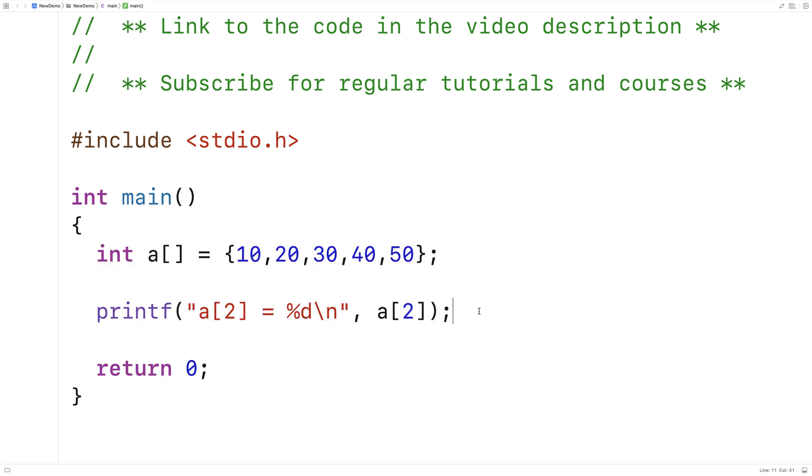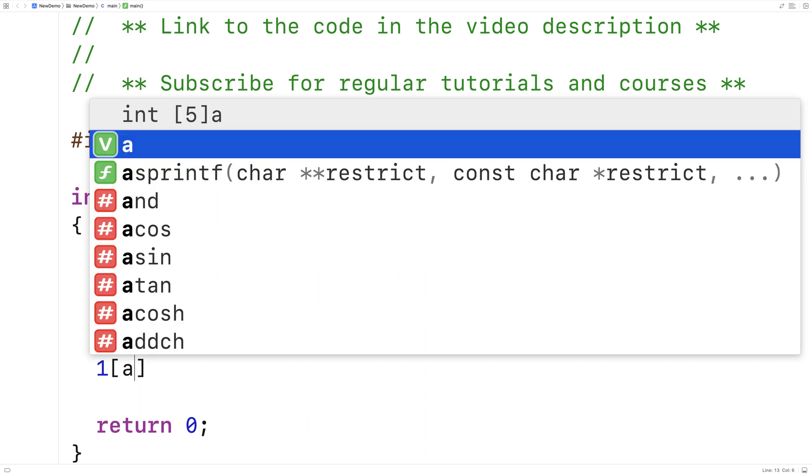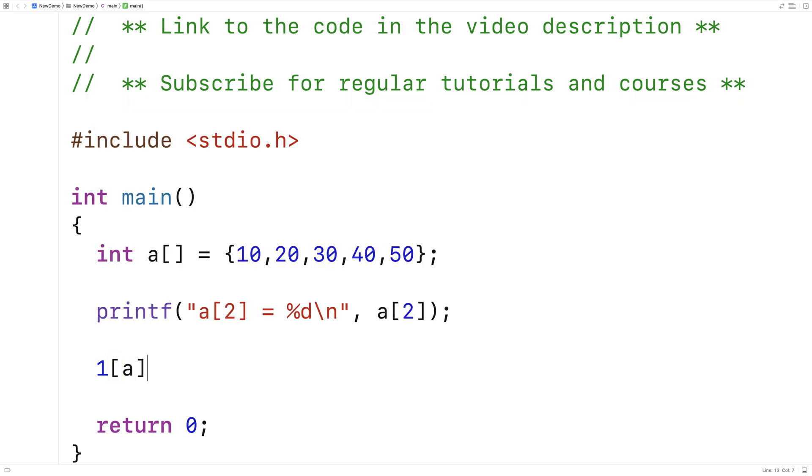Now another way that we can actually set and access array elements is by putting the index first and then the array inside the brackets. So I can technically do this, I could technically say 1 a, this will actually allow me to access the second element in the array here, 20.